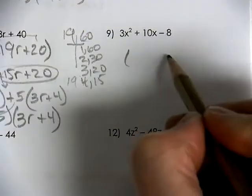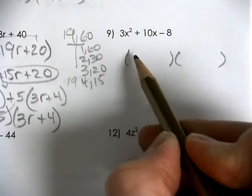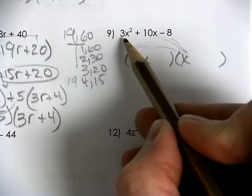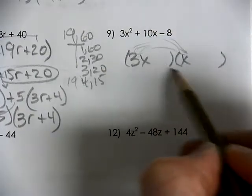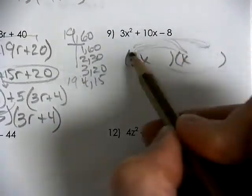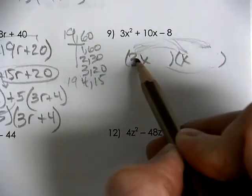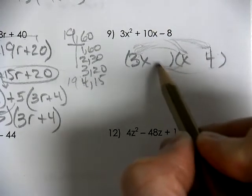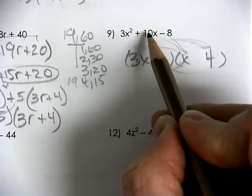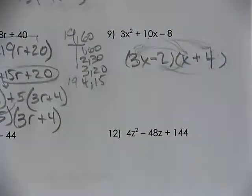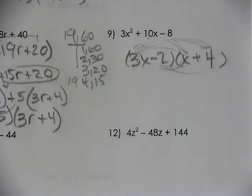For number 9, 3x times x multiplies to make 3x squared. I need to come up with 8 for the last two numbers. Trying 4 and 2: 4 times 3 makes 12, and 12 minus 2 is 10, so if that's a positive 12 and a negative 2, that gives us the positive 10 in the middle. That's our guess, and we checked it.